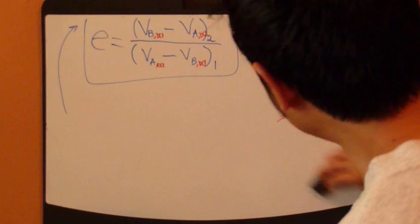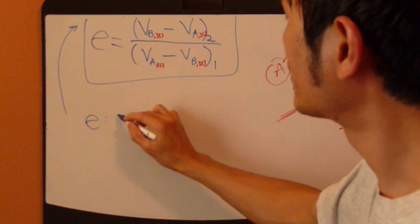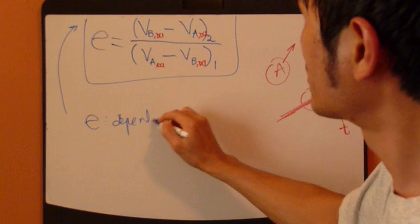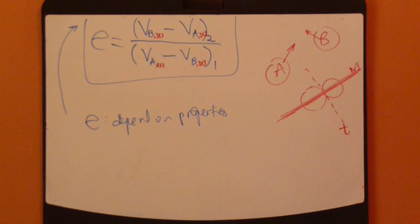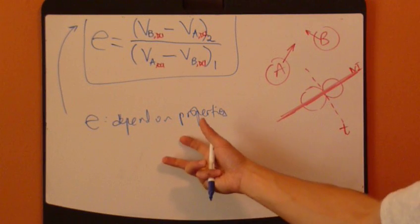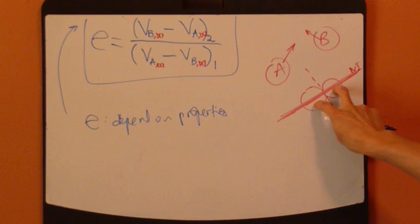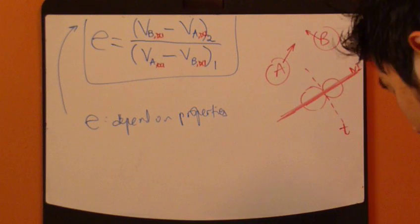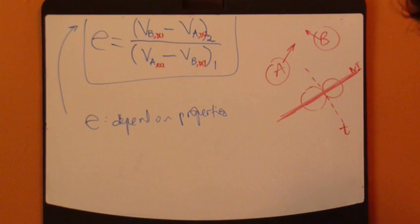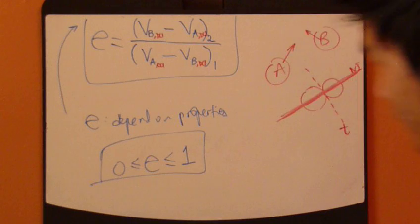So, this is how E is defined. However, E is dependent on many properties, properties of your particles. For example, the material property, what one is made out of, the surface condition between the two objects, and things like that. So, this actually is a property of your particles. And E is always between 0 and 1.